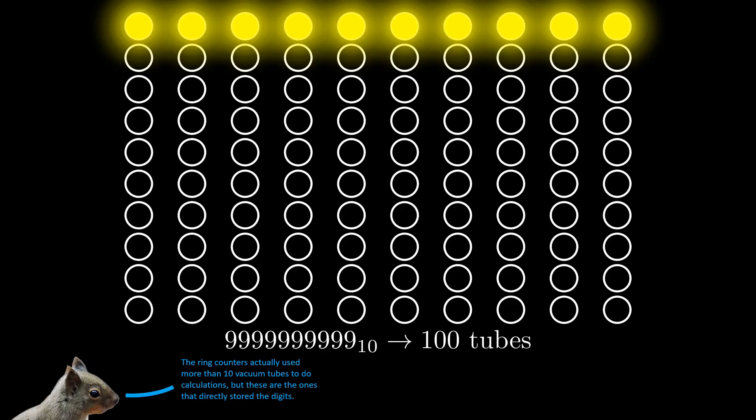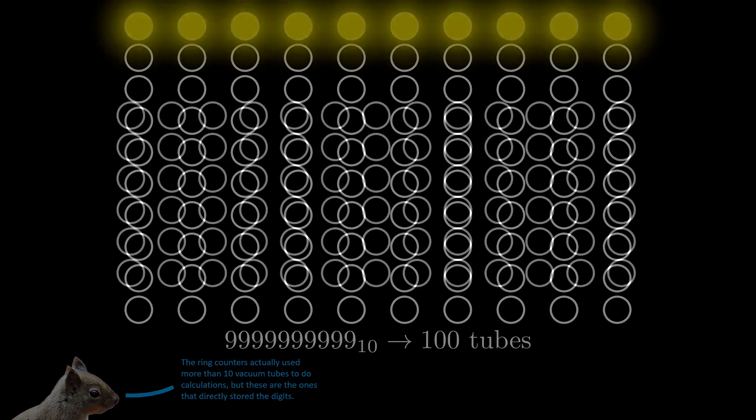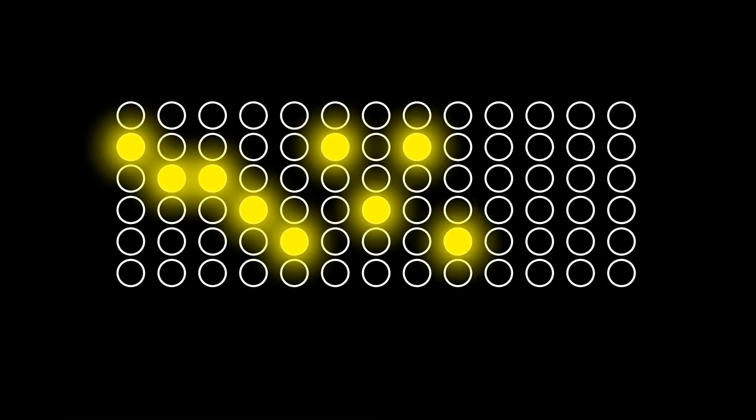But moving away from ENIAC specifically, we don't have to use base 10, do we? You can build a ring counter of any size. What if we use base 6 for example? Writing 10 billion minus 1 in base 6 requires 13 digits, but the 40% smaller ring counters more than make up for it. In base 6 it only takes 78 vacuum tubes.